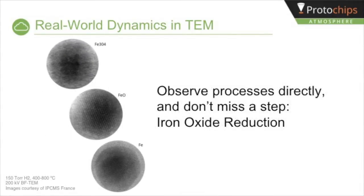Processes can also be followed step-by-step so that important changes in behavior are not missed. In this example, iron oxide is reduced to FeO, and finally to metallic iron at high temperatures and at 150 torr of hydrogen. The changes in the crystal lattice can be tracked step-by-step and are apparent in the series of high-resolution bright-field TEM images. Selected area diffraction and FFTs can be used to confirm the phase changes.